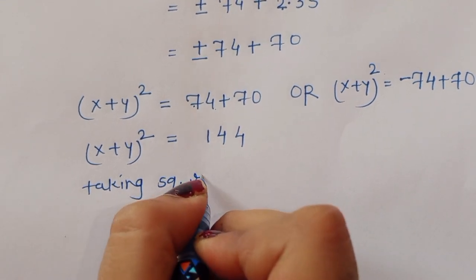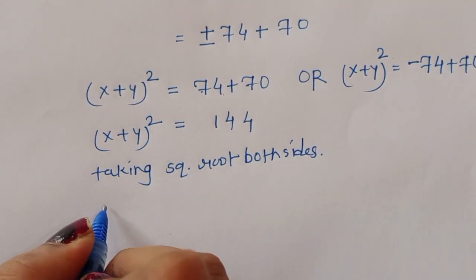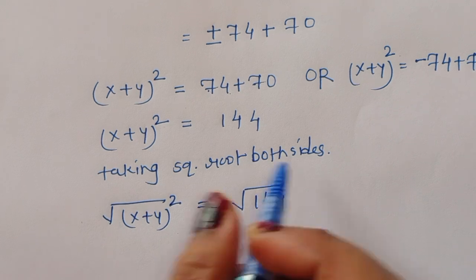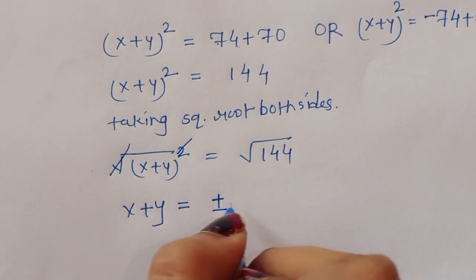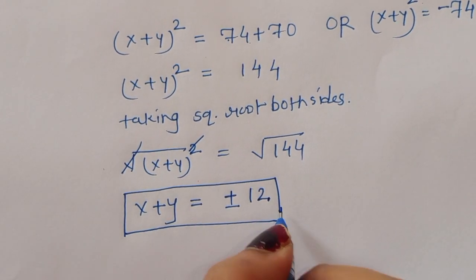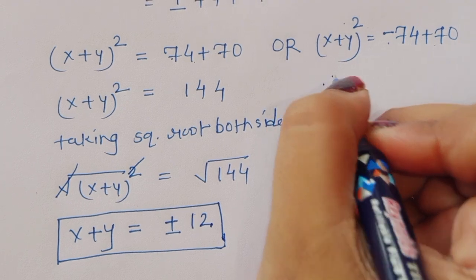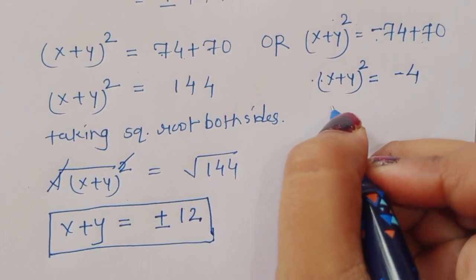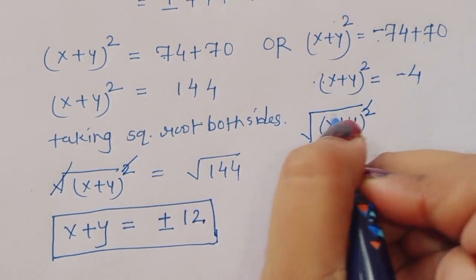In the first case, x plus y whole square equals 144. Taking square root both sides, x plus y equals plus or minus 12. In the second case, x plus y whole square equals minus 74 plus 70, which is minus 4.